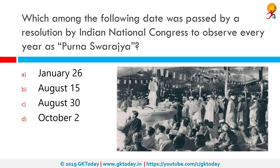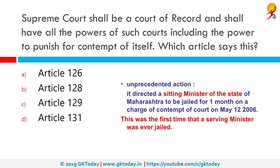Which among the following dates was passed by a resolution by the Indian National Congress to observe every year as Poornaswaraj Day? The correct answer is January 26, because in the Lahore Session of 1929, the Indian National Congress passed a resolution under the presidentship of Jawaharlal Nehru to observe 26 January every year as Poornaswaraj Day.